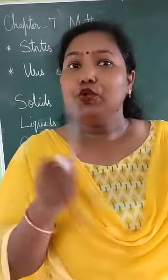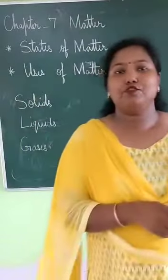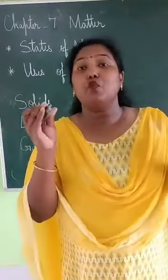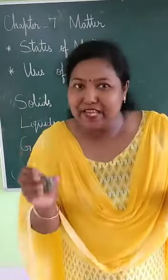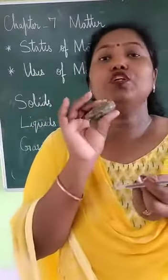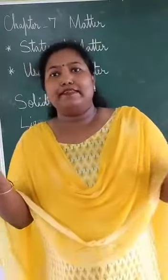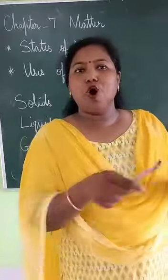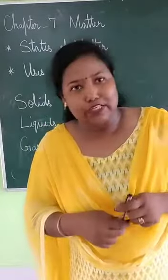Solids do not change shape when moved from one place to another. If you move them from here to there, the shape won't change — it will remain the same. Examples of solid are table, pen, cup, box, etc.